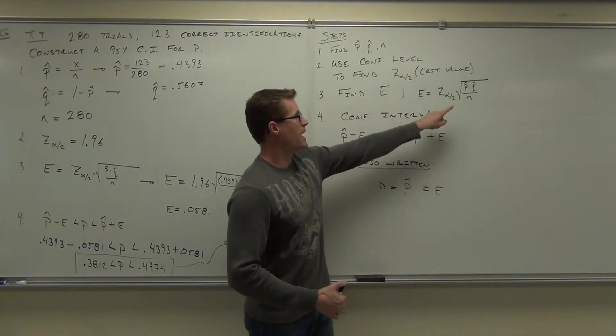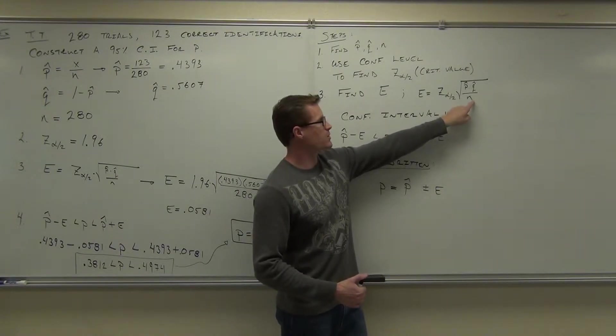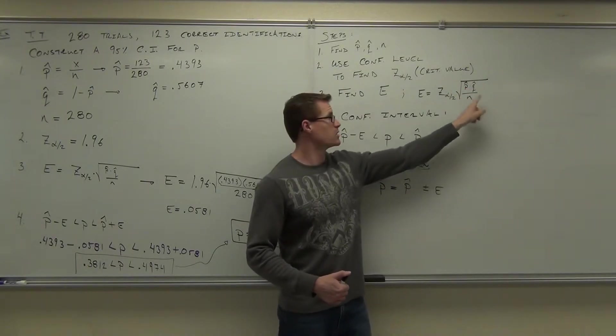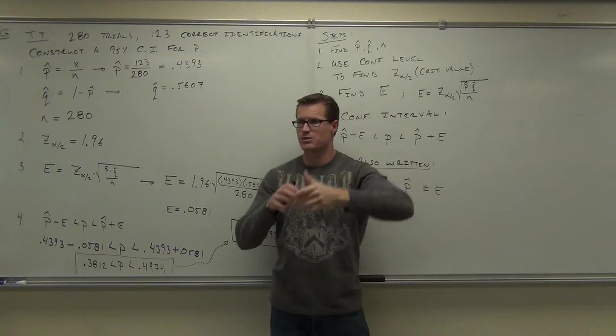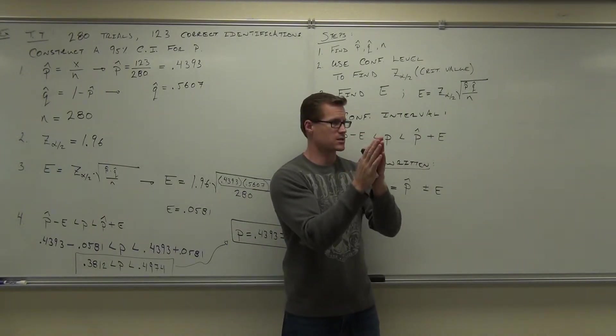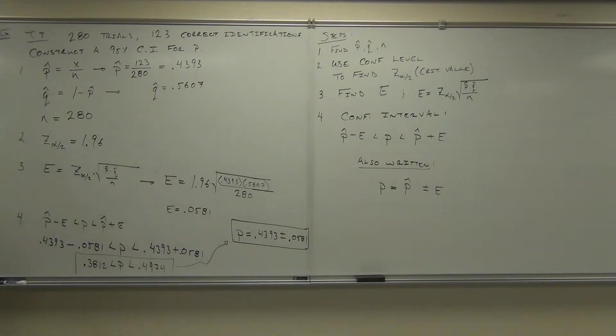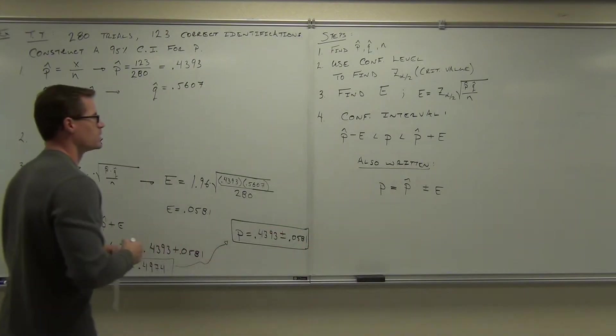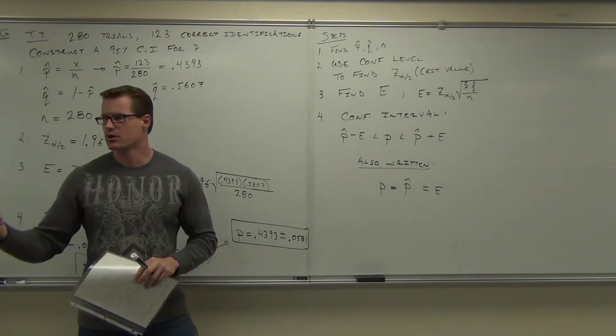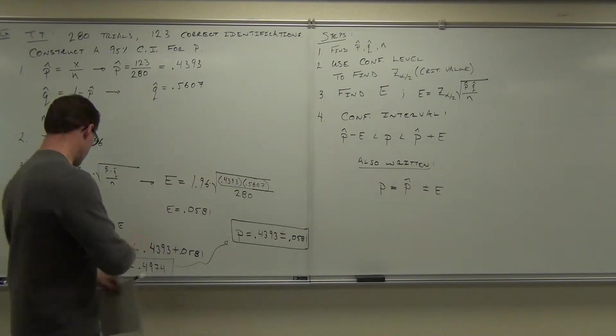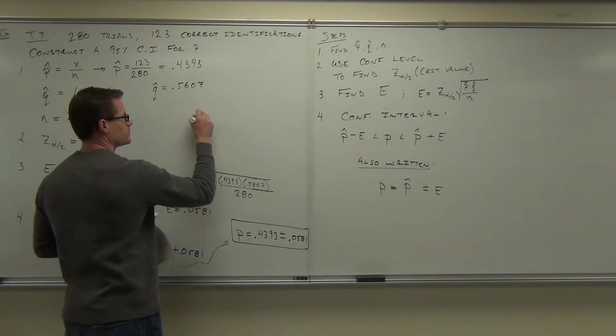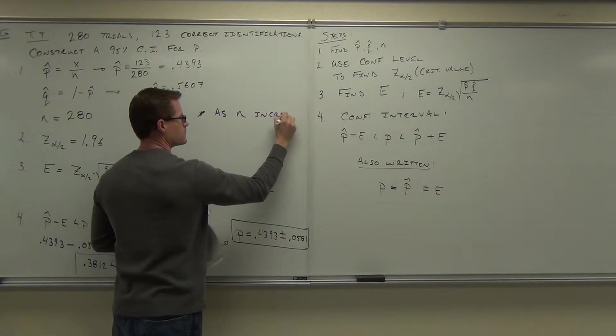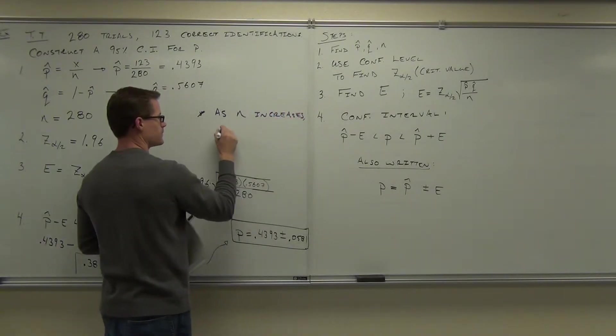As your sample size goes up, look at the board. As your sample size goes up, this fraction gets smaller, which means the square root gets smaller, which means when you multiply it by a critical value, that gets smaller. So sample size goes up, your interval really shrinks. As n increases, E decreases.